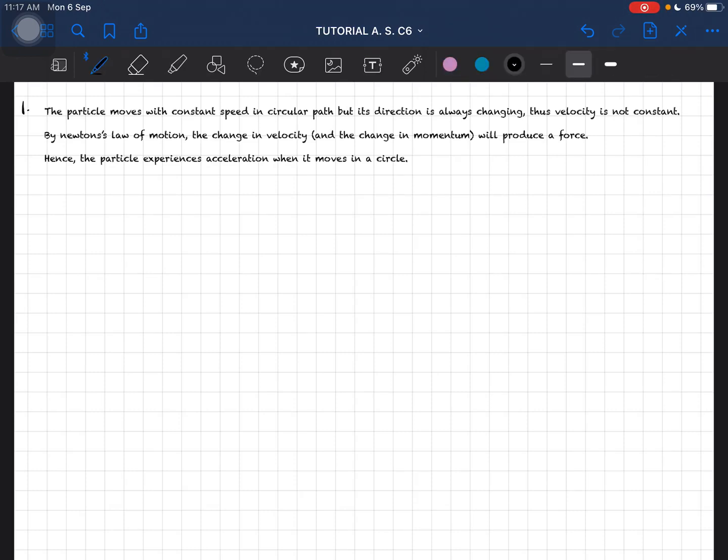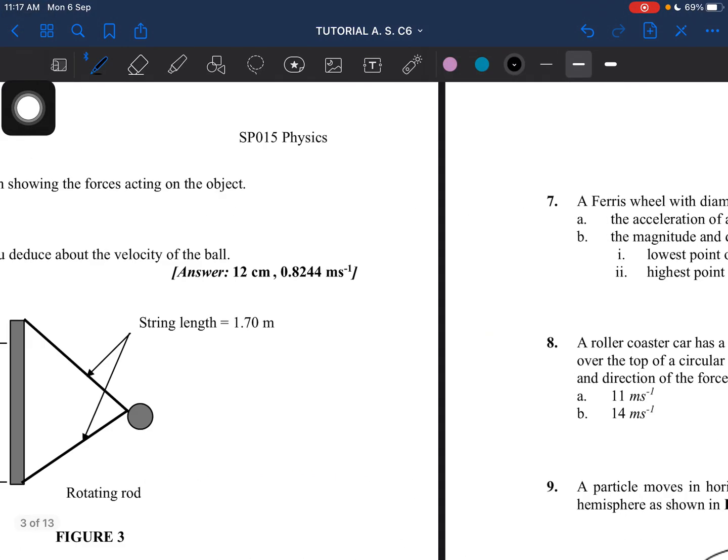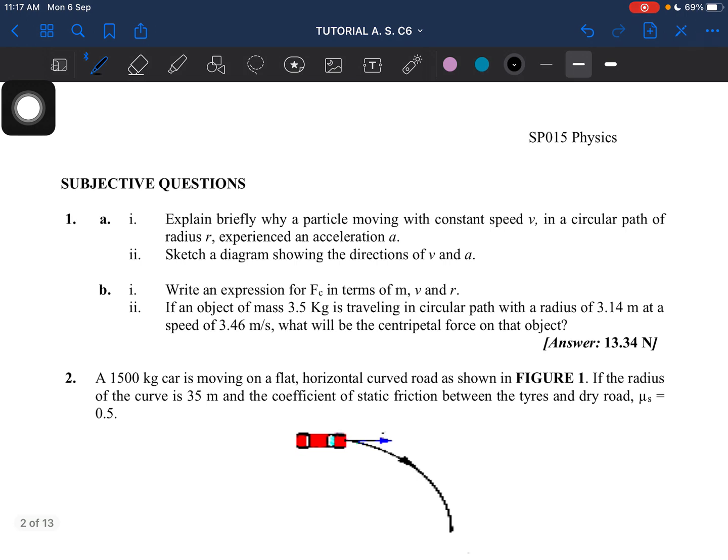Hello everyone, welcome back. Today we will be going into subjective questions on Tutorial Chapter 6. The first question asks us to explain briefly why a particle moving with constant speed v in a circular path of radius r experiences an acceleration.